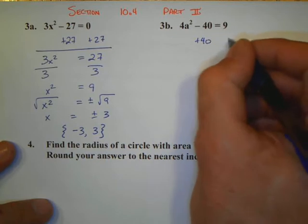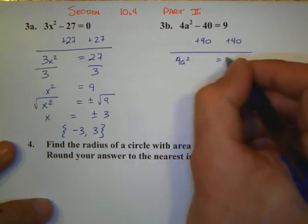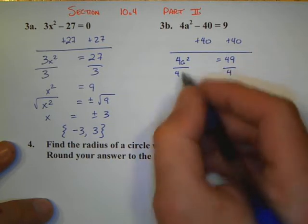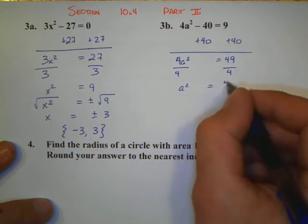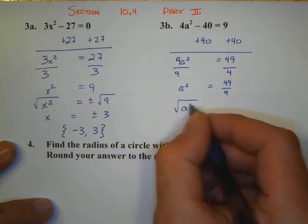Let's look at our last one here. We add 40 to both sides and we get 4a squared equals 49. We divide both sides by 4 to get the a squared by itself. And now we have 49 over 4.